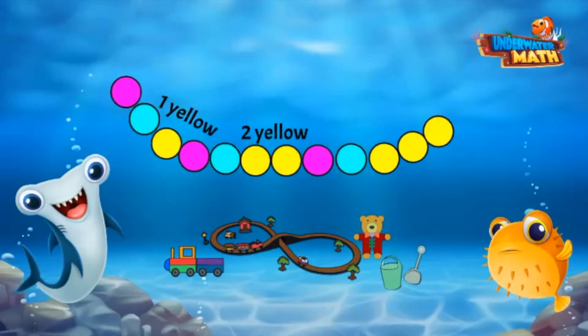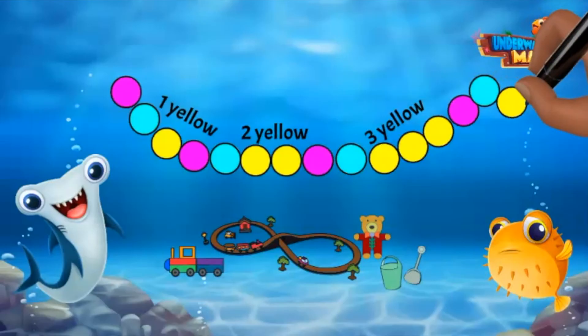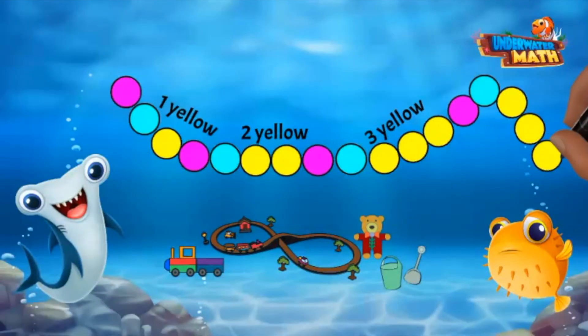Then we again have a pink and blue bead followed by three yellow beads. It seems that the yellow beads are growing by one — we're adding one yellow bead more each time. So the next beads would be a pink bead, then a blue bead, then four yellow beads. You finished my bracelet, Hank — thank you!